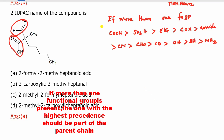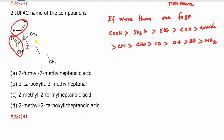Acid carbon is numbered 1 — first carbon is 1, then 2, 3, 4, 5, 6, 7. The longest chain is 7 carbons. Since it is an acid, it is heptanoic acid. So B is the answer.